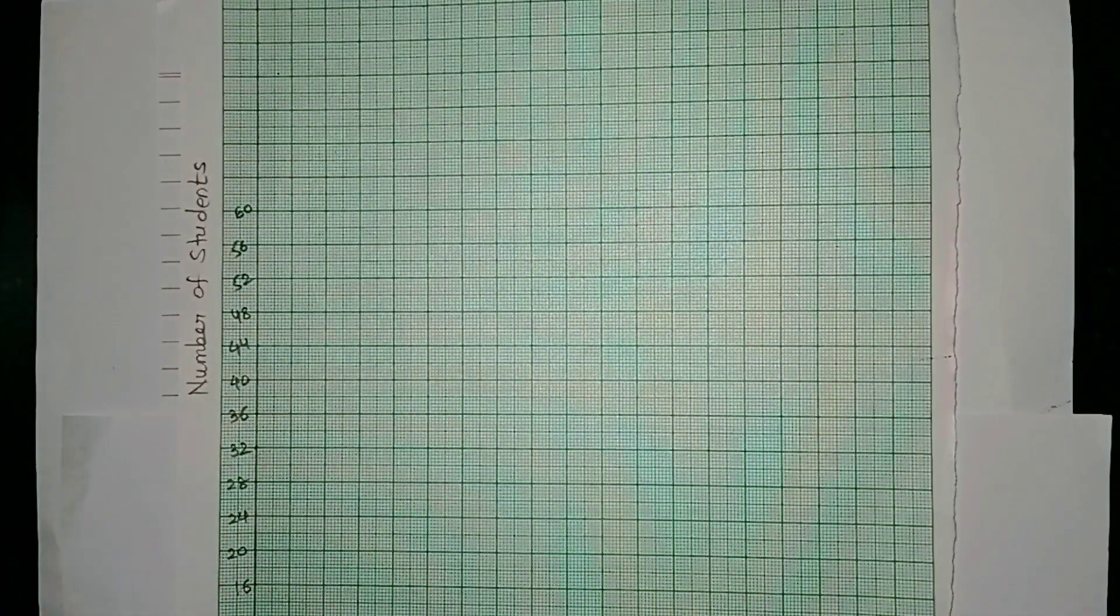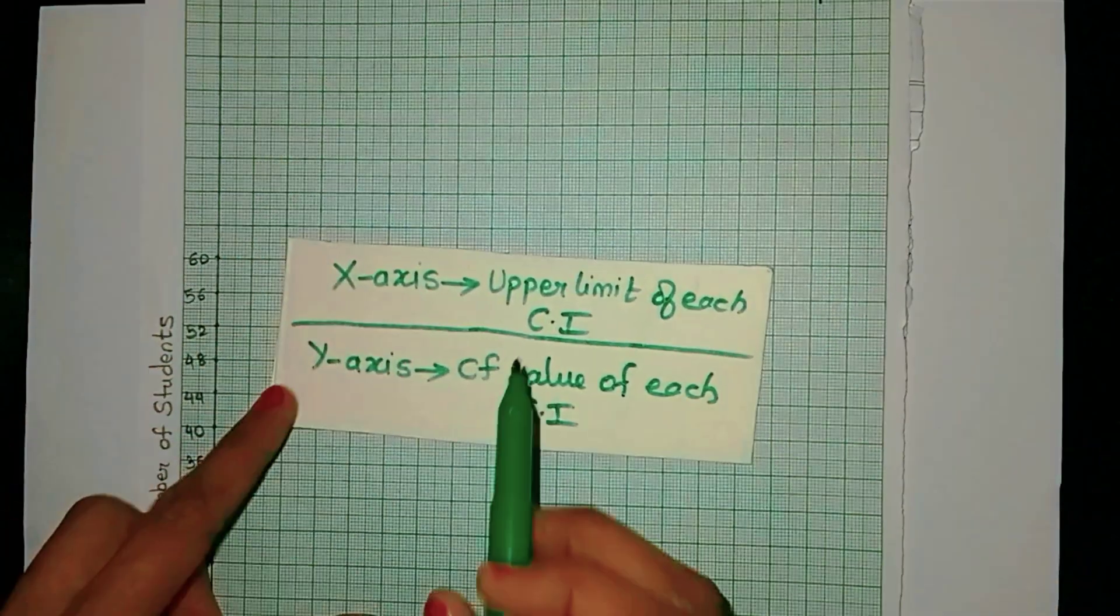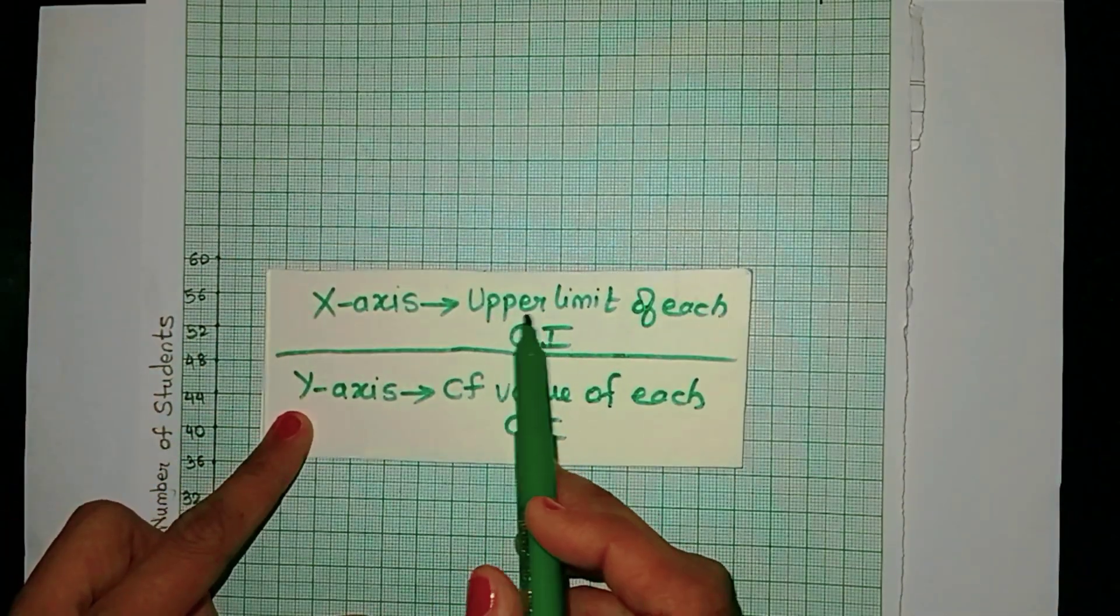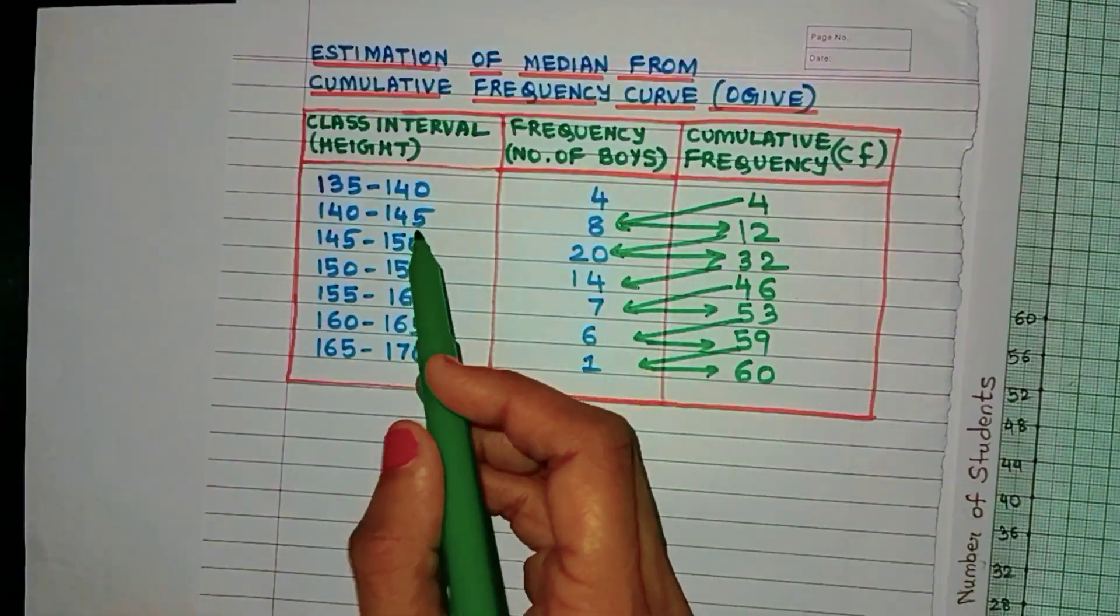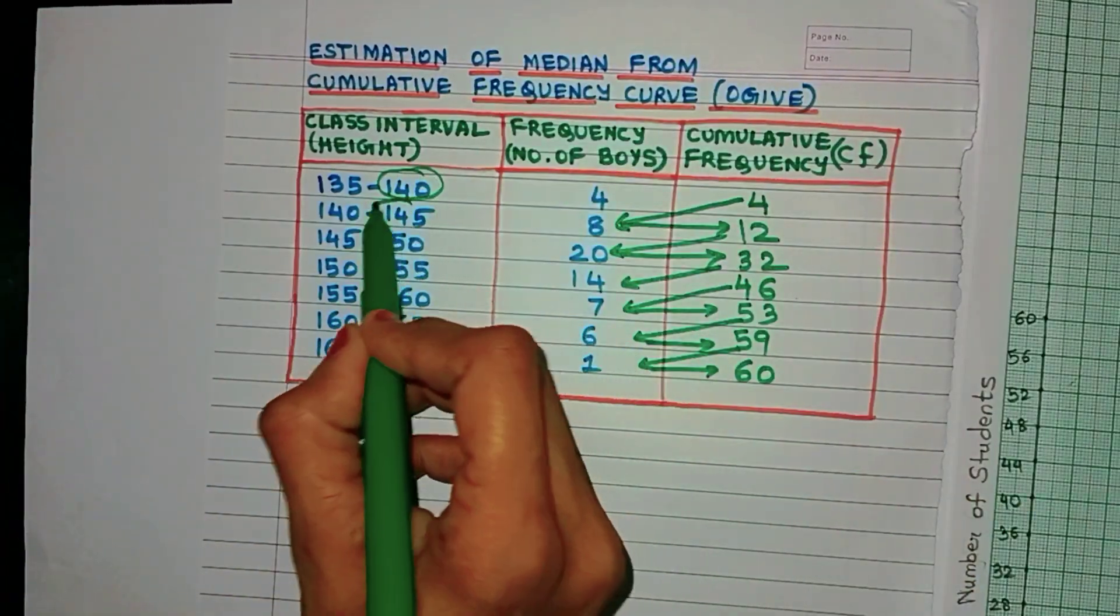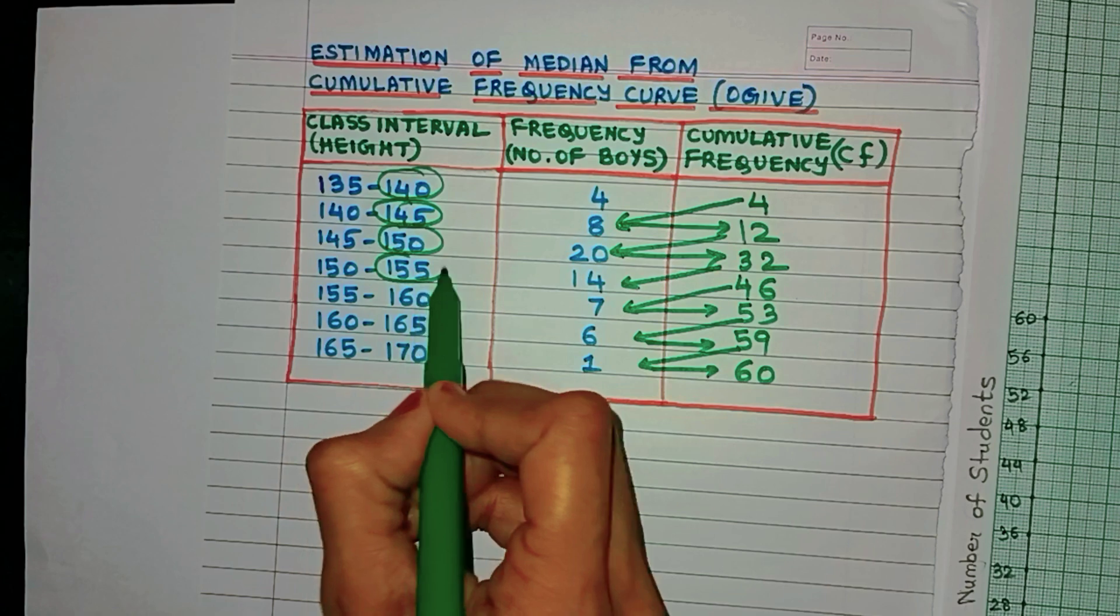So friends, this is the graph. Here is the x-axis and this is the y-axis. Now what do we plot on these two axes? Well, in the x-axis we have to write the upper limit of every class interval.